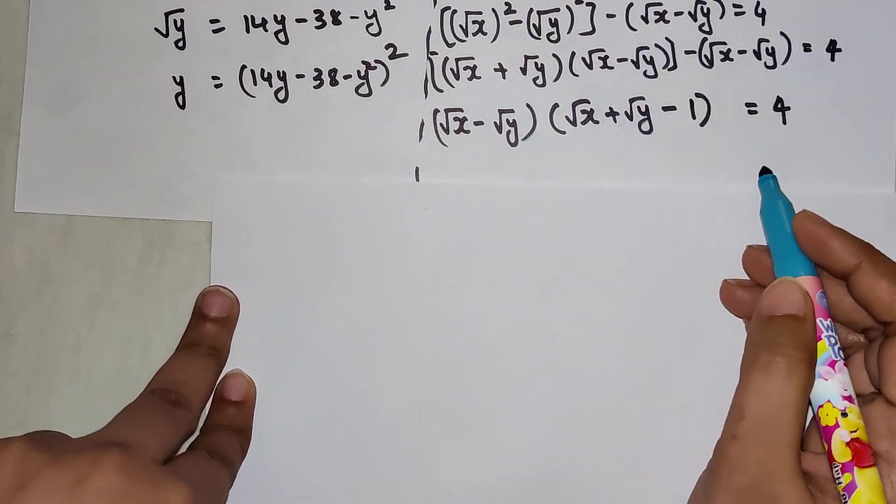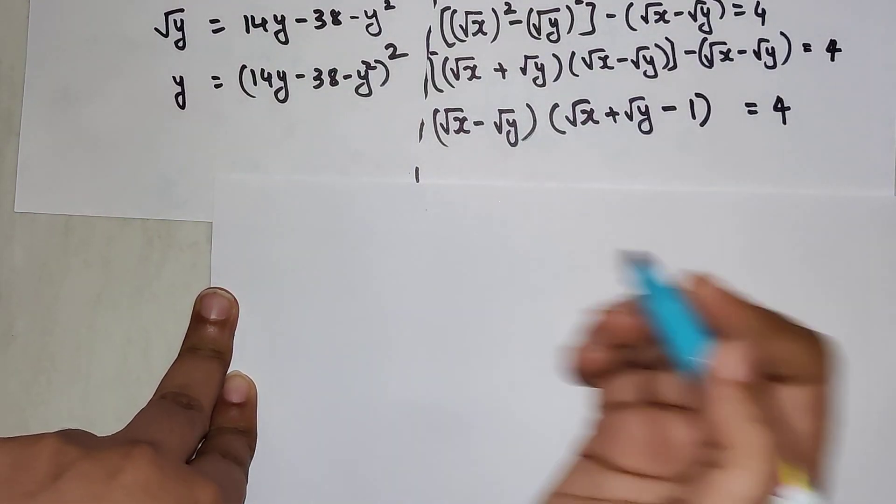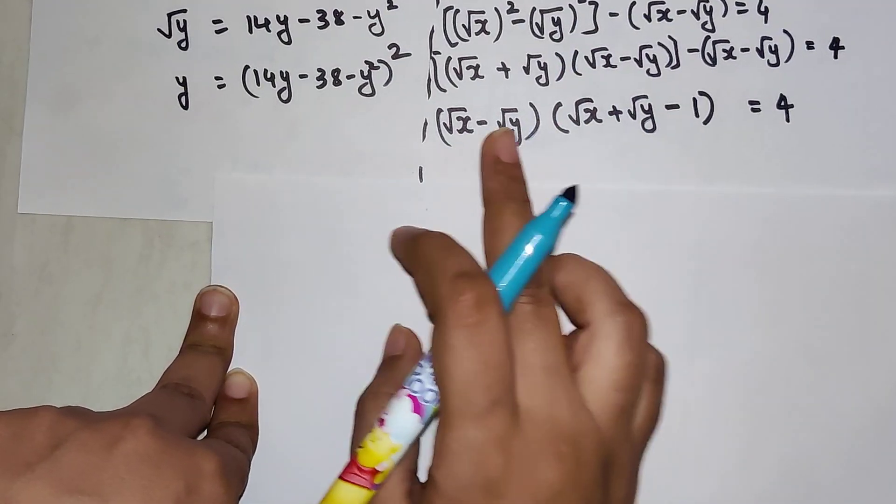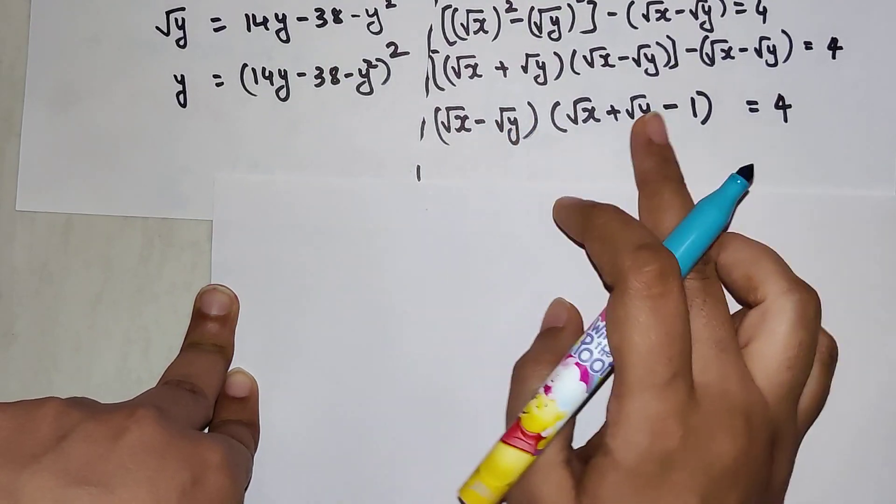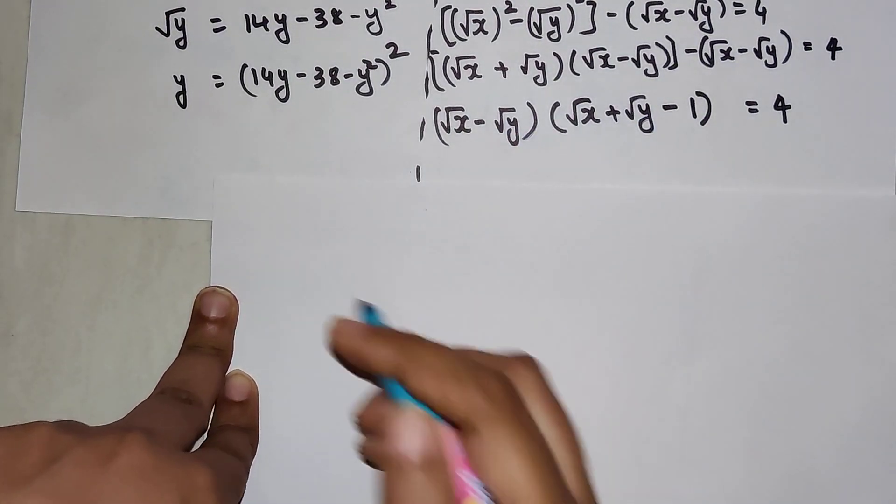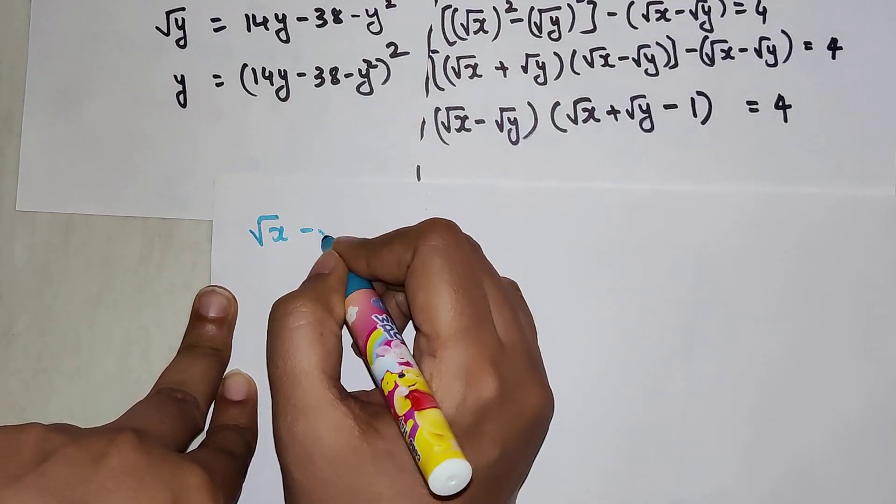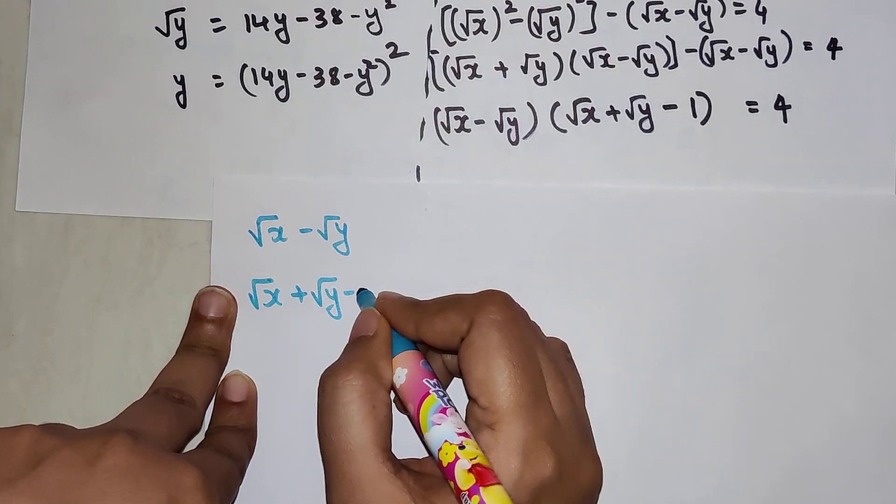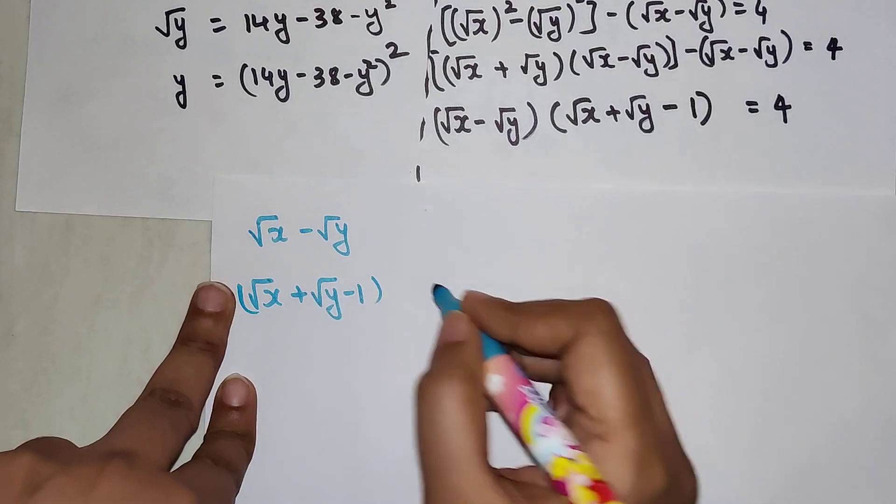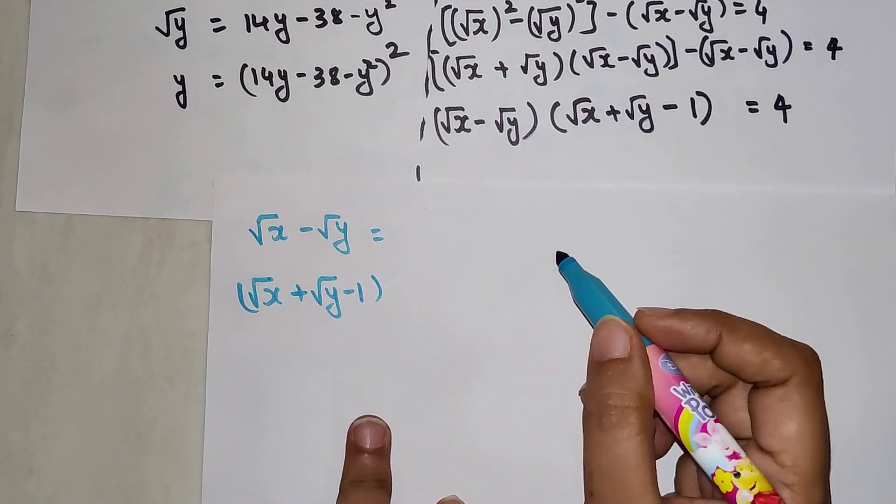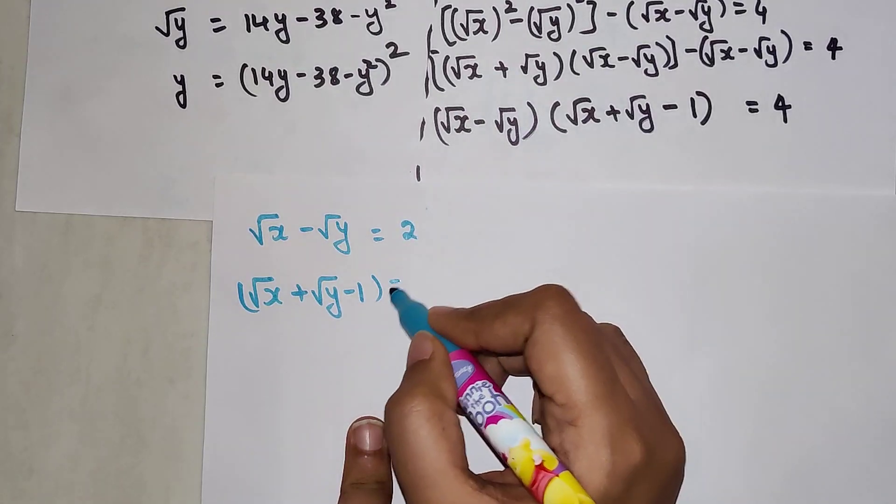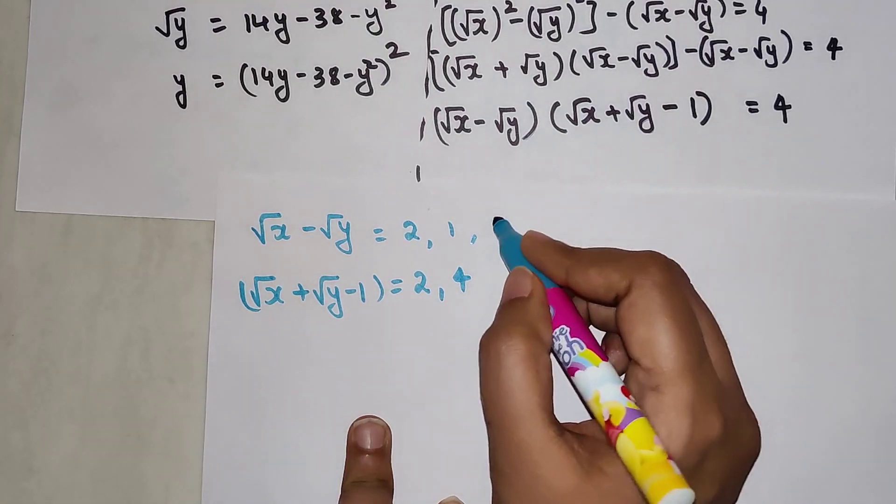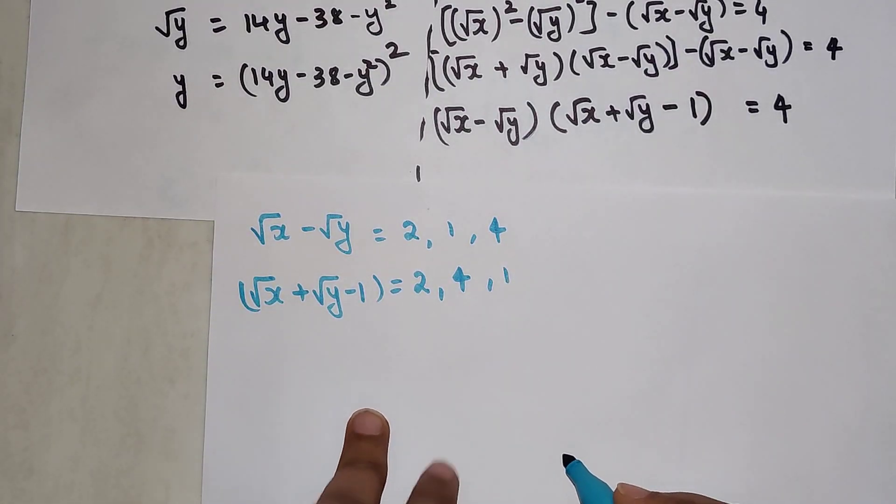This is where we will go with our assumption. We know that root x minus root y times this bracket equals 4. I can say there will be only so many possibilities where the bracket values will get you 4. If this was 2 then this value will also become 2. If this was 1 then this value will become 4. If this was 4 then this value will become 1.